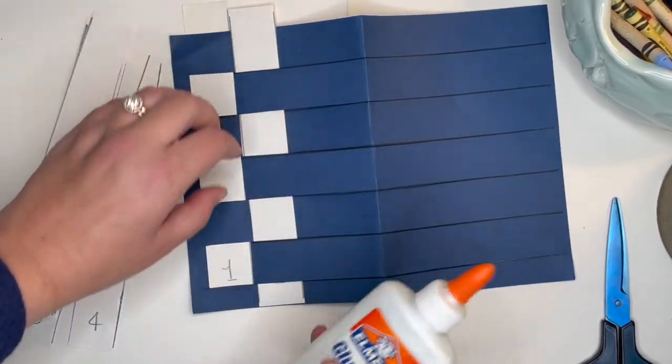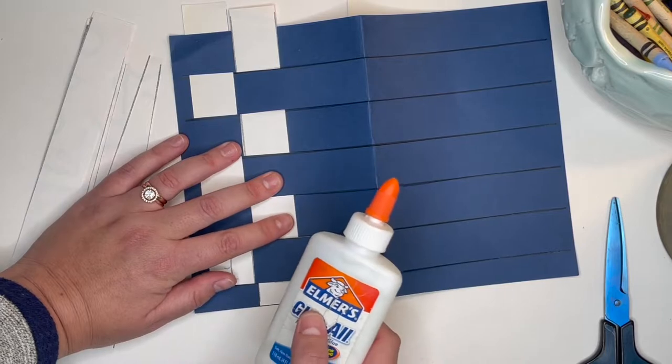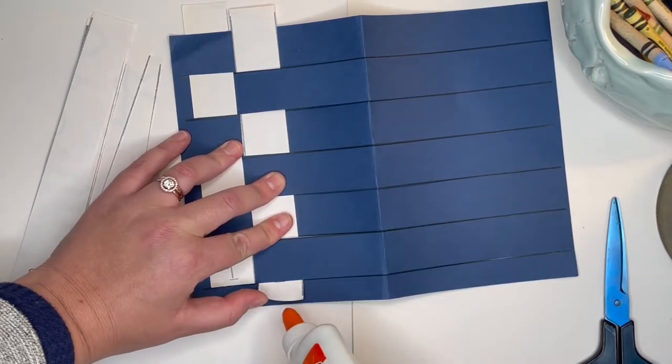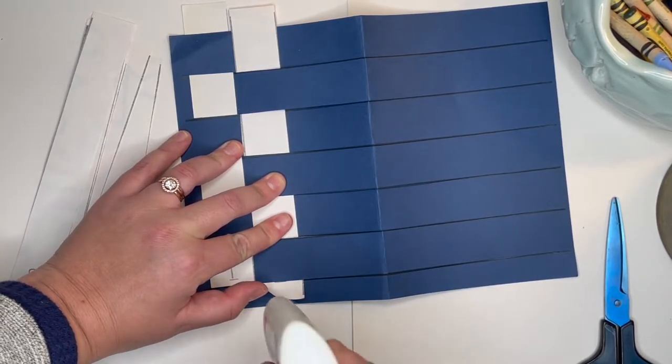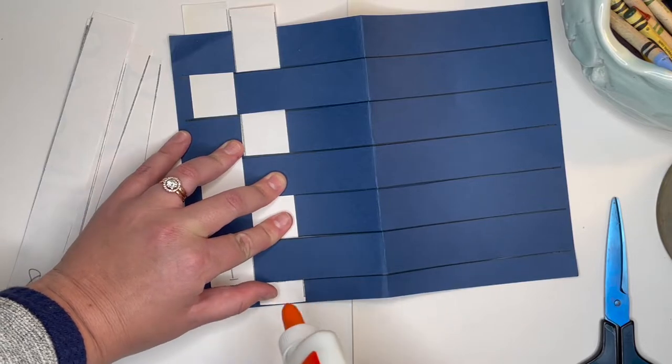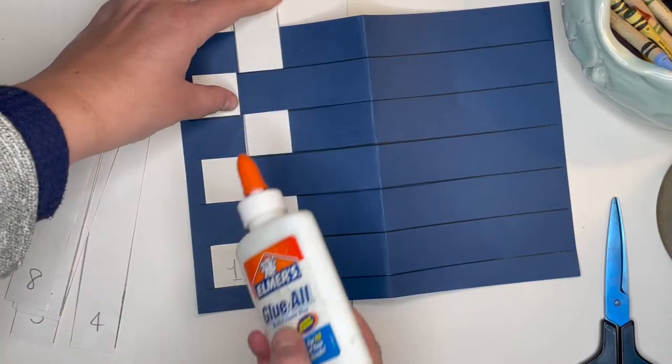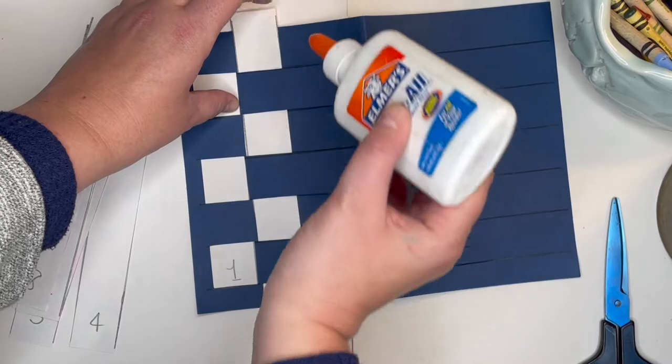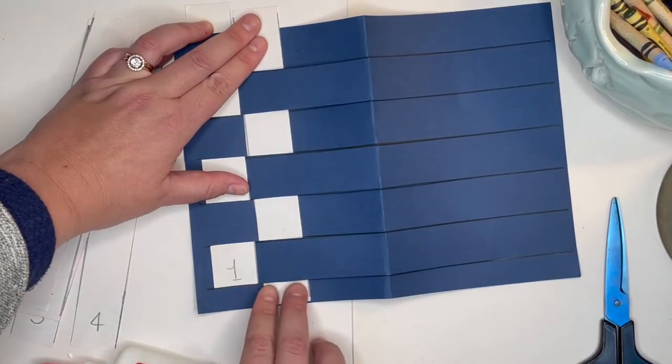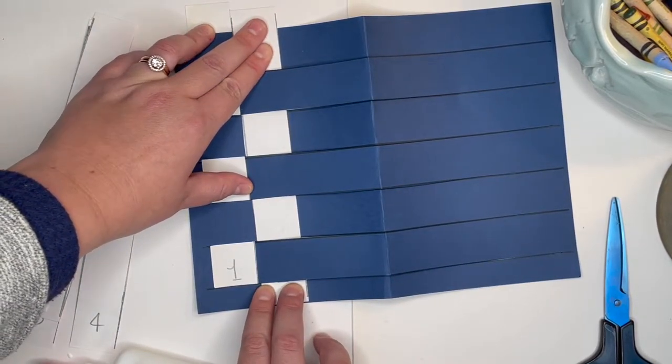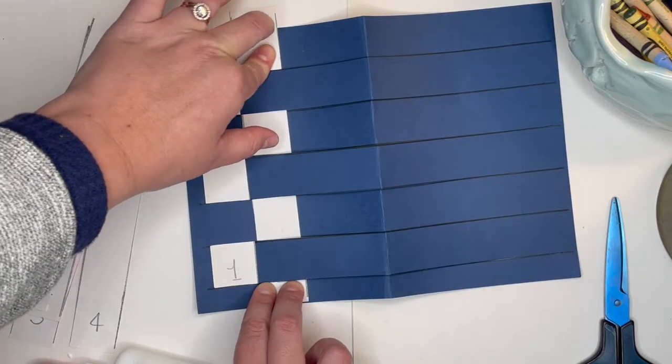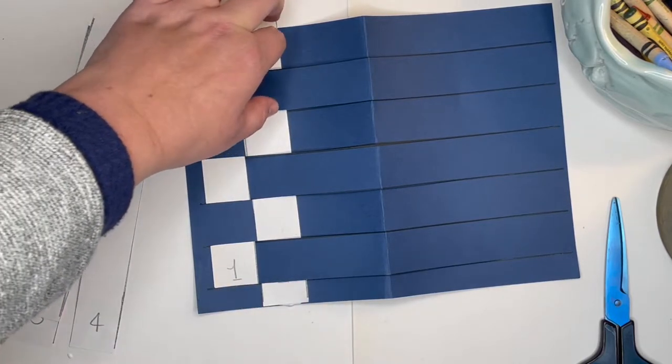And as you are working, if you would like to glue down your strip of paper to the blue paper to help you with our weaving, feel free to do that. Put a dot of glue at the ends of your strips of paper and hold for a moment until you are ready to move on.